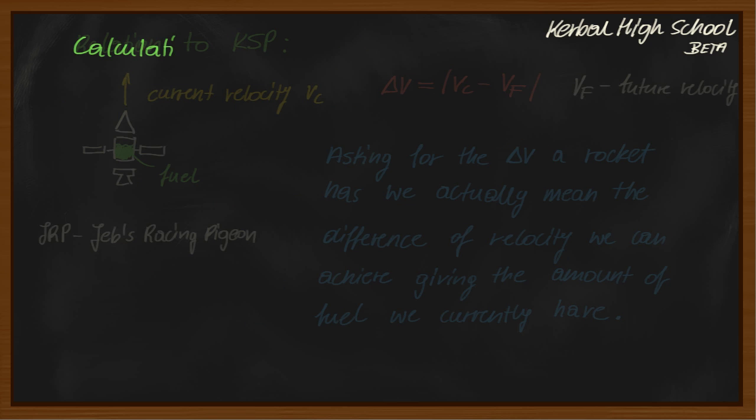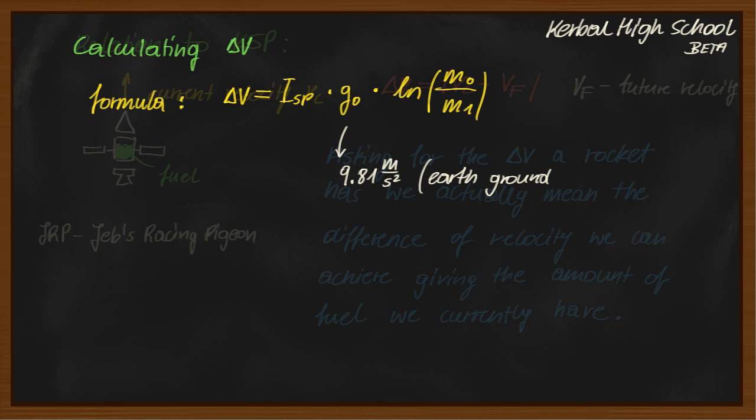Now let's calculate the delta v. We have a very simple formula for this. Delta v equals the specific impulse times the earth's ground gravity acceleration times the natural logarithm of the total mass before divided by the total mass after the burn our craft has.